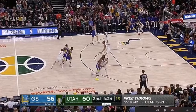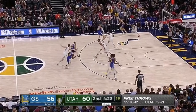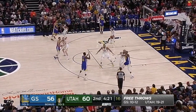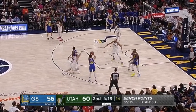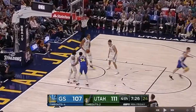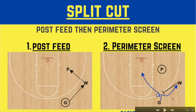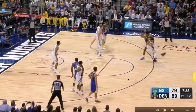In part one we looked at split actions and some other things, and we're going to start part two with split actions as well. A split action is when the post is fed and then there's a screen on the perimeter. Step one in a split cut is a guard-to-wing pass, and then the wing feeds the post. Step two is a perimeter screen — the wing could set a screen for the guard, or the guard for the wing. That's the basic essence of a split cut.